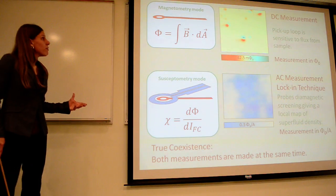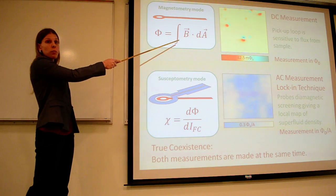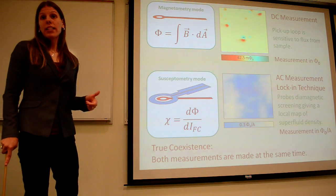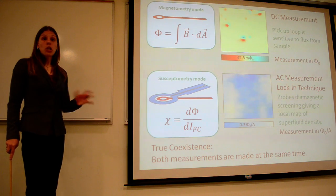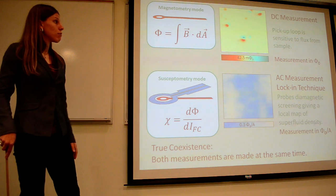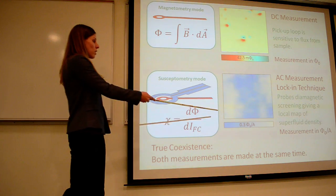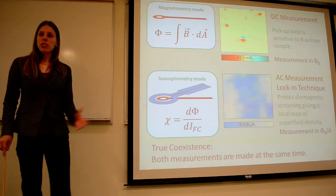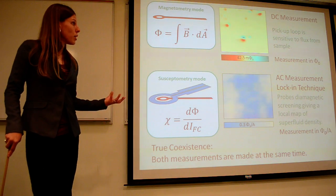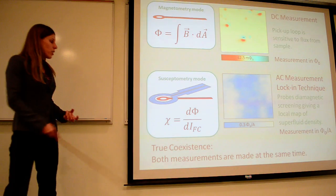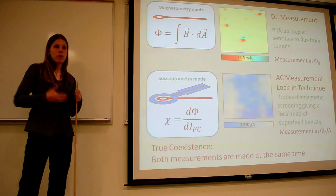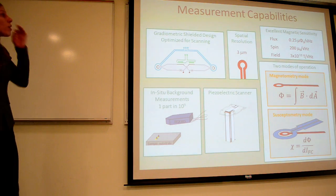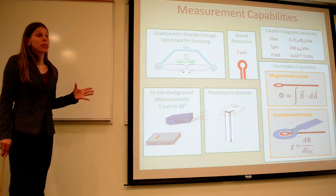And then the last benefit of this is that because this is a DC measurement and this is an AC measurement, we can actually take these two images at the exact same time. So just by doing a low-pass filter on the signal, we map out the DC flux in the sample, and by looking at the lock-in signal, we can map out the screening currents. And so this is for the measurements that you'll see in the future where I talk about measuring coexistence of magnetism and superconductivity. This really is a true coexistent measurement where both measurements are being taken at the same time. So that concludes the measurement capabilities of the system.